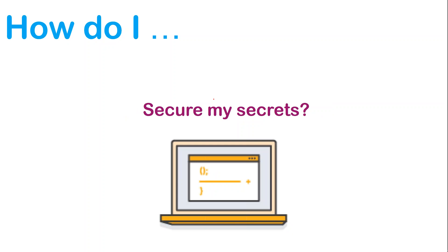How do I store my secrets? If you have a license key for your Windows systems, where do you store it securely, and how do you distribute it to all your instances? It's not just your license key — you might have an API key, a secure key, a secret key, any of the secrets that you want to share among all your instances. How do you do that when you have a fleet of instances?